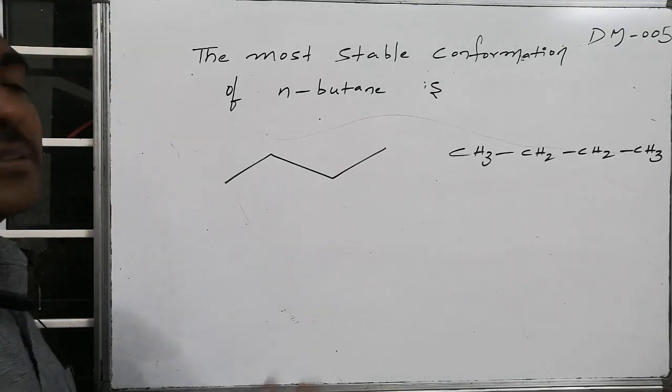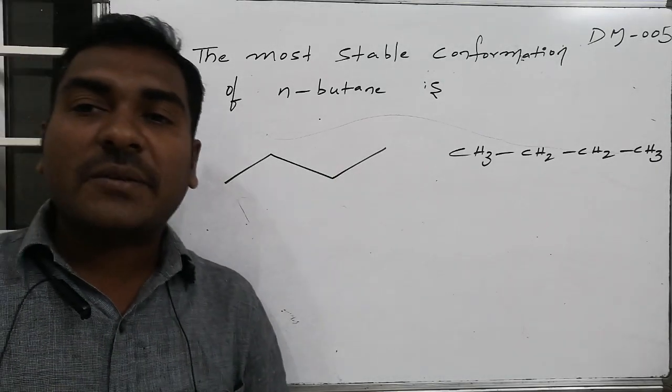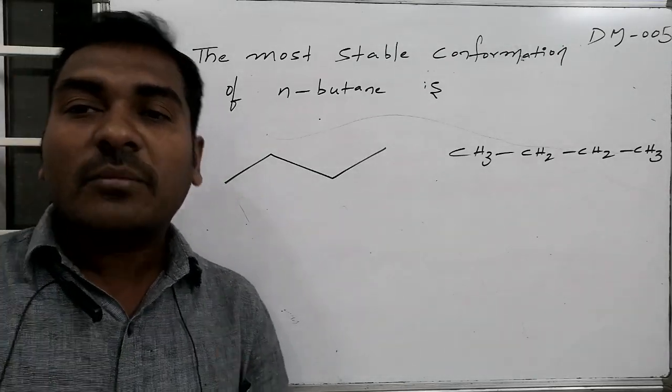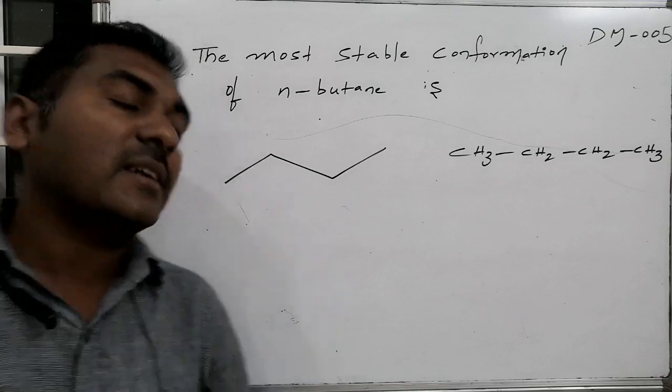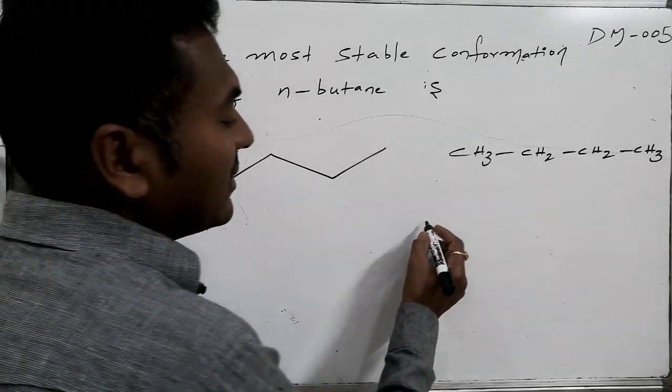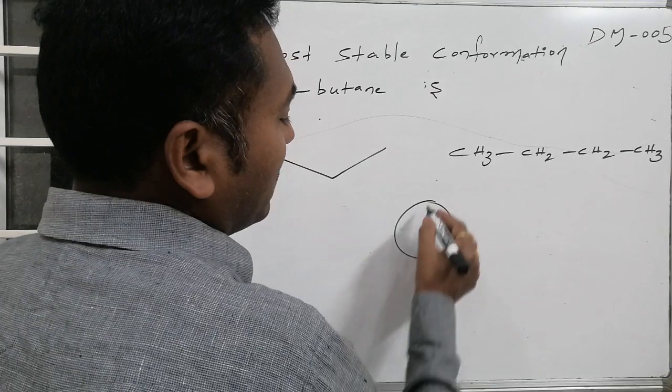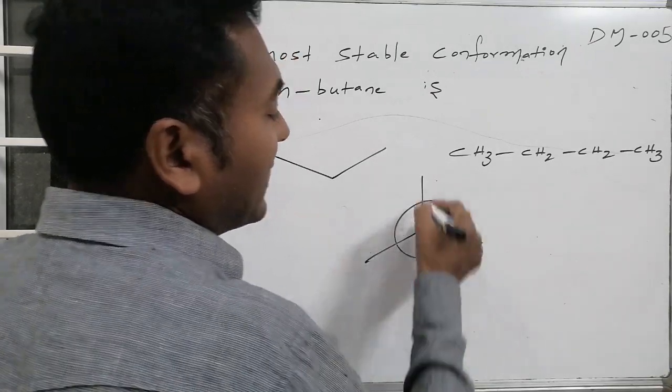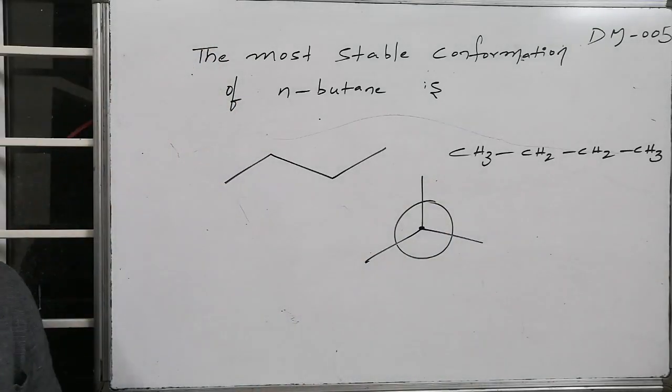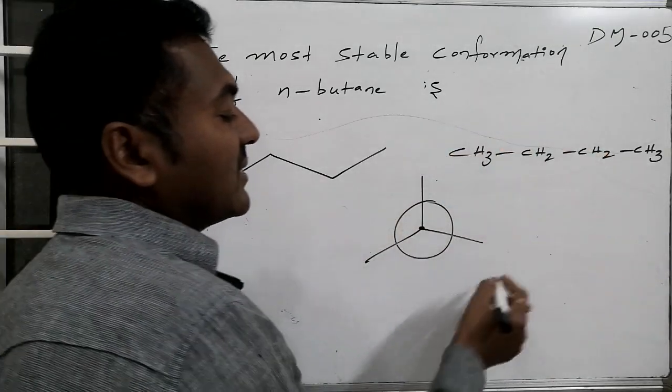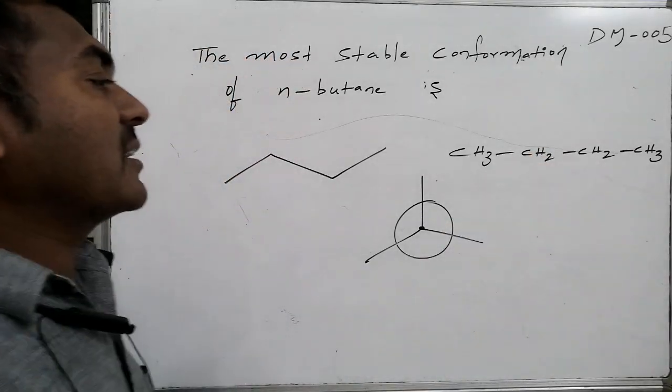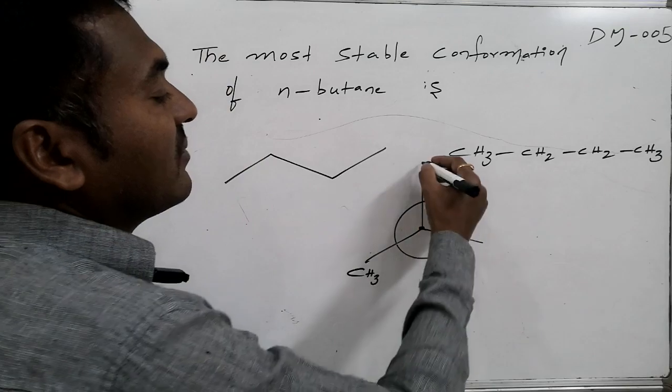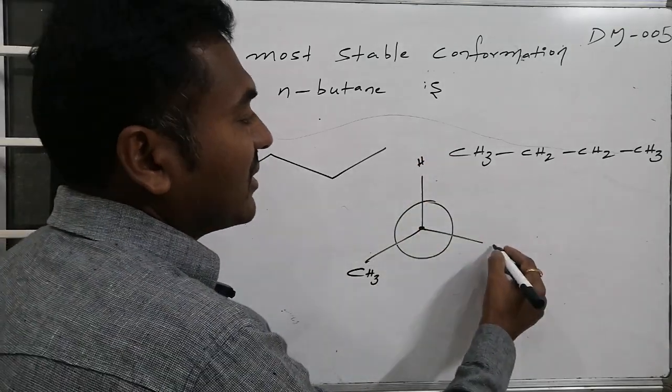This n-butane system is possible in infinite varieties of conformations in that some of the conformations are landmark conformations in terms of energy. Suppose in the Newman presentation if I write the butane related conformations, this is front carbon atom whereas the backside circuit indicates the backside carbon atom. So this is connected with one methyl, one with hydrogen and other also with hydrogen.